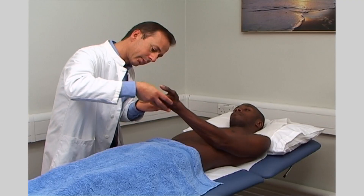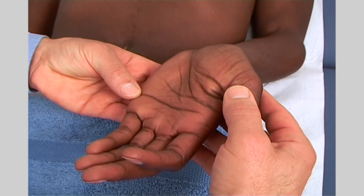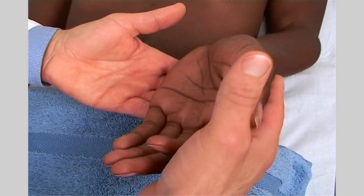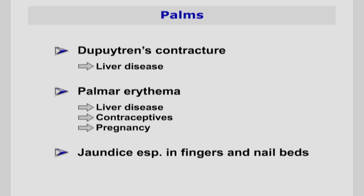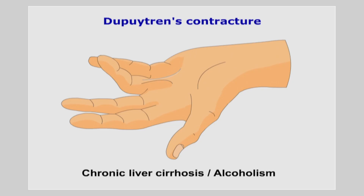Inspect the palms of the hands for evidence of Dupuytren's contracture and palmar erythema, as these may be signs of liver disease. When inspecting for palmar erythema, look over the thenar and hypothenar eminence for abnormally red palms, also referred to as liver palms. In Dupuytren's, the palmar fascia becomes shortened, causing flexion in the fingers.